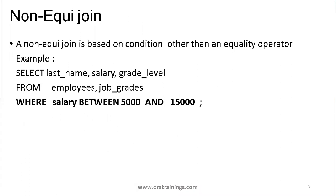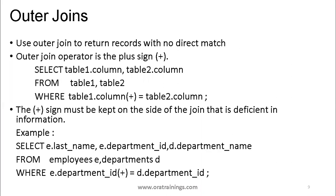Coming to non-equi join: instead of mentioning an equals condition, we mention a not-equal-to condition (or other non-equality conditions like BETWEEN). That's why it's called non-equi join. If there's no WHERE clause at all it's a cartesian join, but if there's a WHERE clause with a non-equals condition, it becomes a non-equi join.